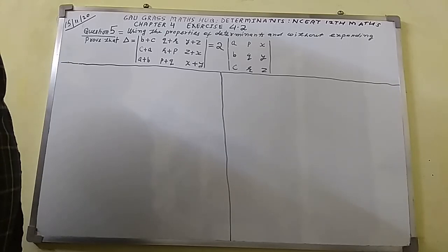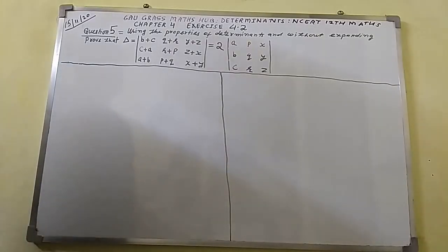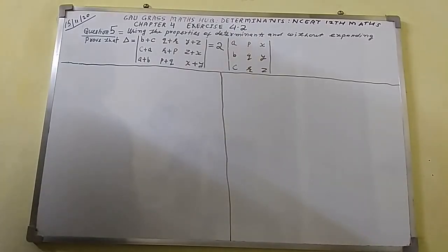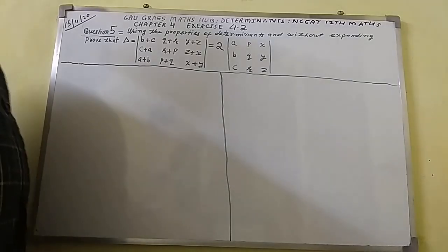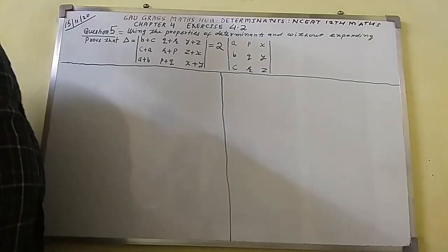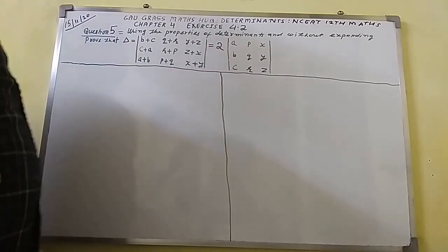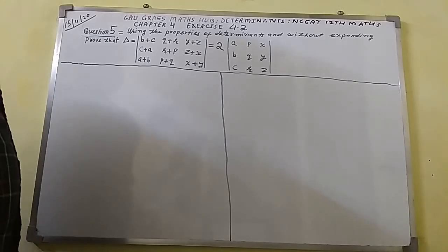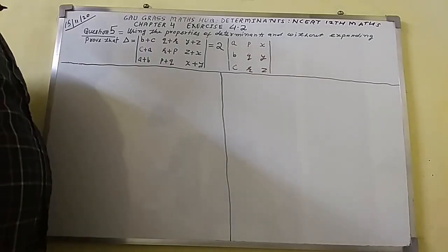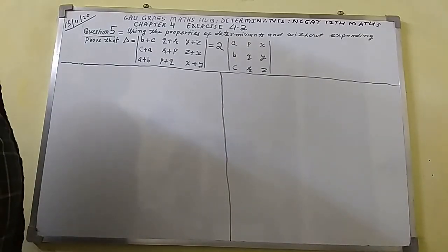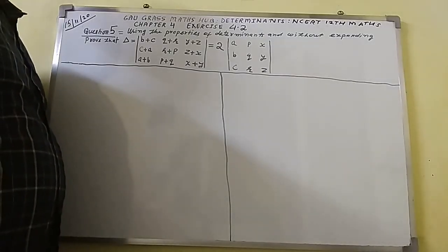Question number 5: using the properties of determinants and without expanding, prove that the determinant is equal to — the elements of the first row are B plus C, Q plus R, Y plus Z; the elements of the second row are C plus A, R plus P, Z plus X; the elements of the third row are A plus B, P plus Q, X plus Y — equal to 2 times the given determinant.